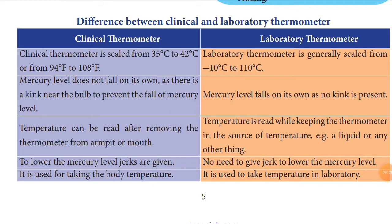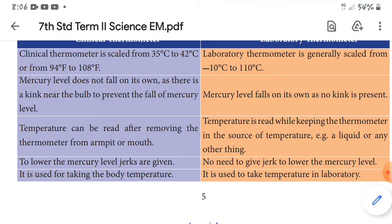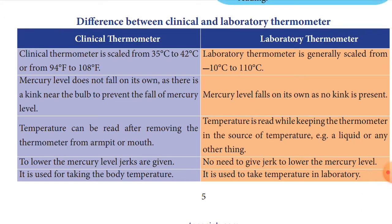Now let's see the important 5-mark question: the difference between clinical and laboratory thermometer. First point — the clinical thermometer scale ranges from 35 degrees Celsius to 42 degrees Celsius, or 94 degrees Fahrenheit to 108 degrees Fahrenheit. The laboratory thermometer scale ranges from minus 10 degrees Celsius to 110 degrees Celsius, with only the Celsius scale, not Fahrenheit.